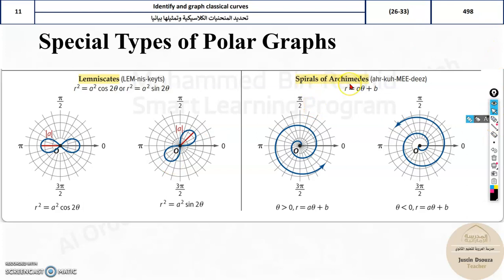And then we have spiral of Archimedes, one of the most beautiful spirals. Now, we have this standard form as R equals A theta plus B. Now, this B can be any number 1, 2, or it may not be even given. So, this is it. Whenever theta is greater than 0, it will go like this. And if it's less than, it will be going the opposite direction altogether.